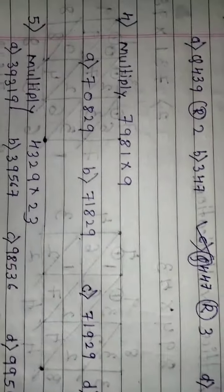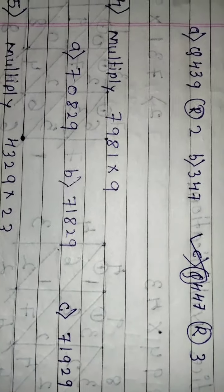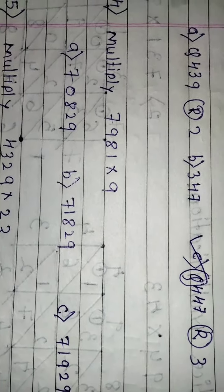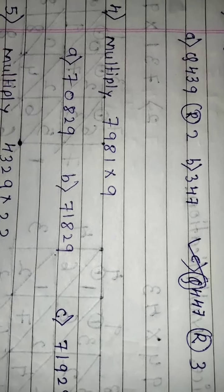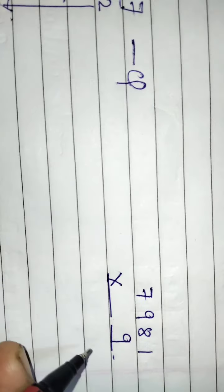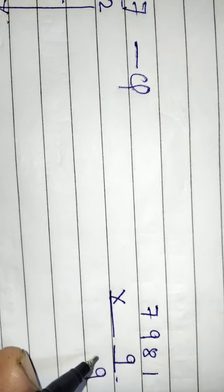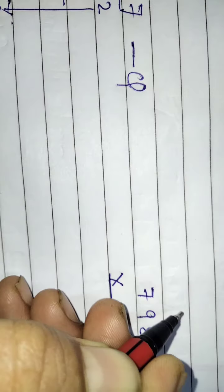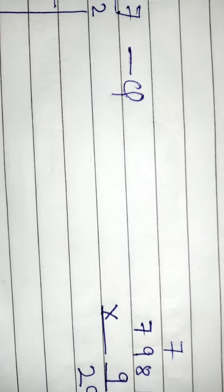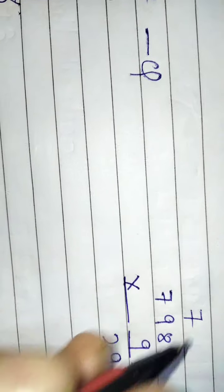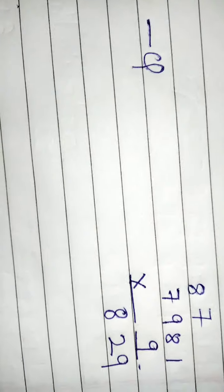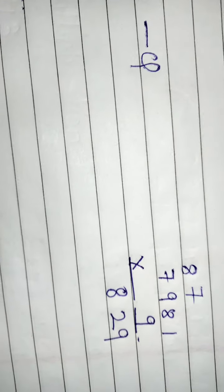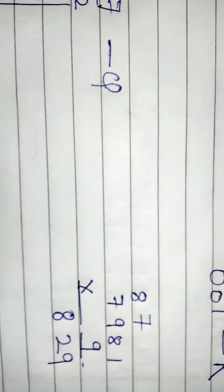Next it is a multiplication. 7981 into 9. 9 1's are 9. 9 8's are 72. 2 is here 7 will go here. 9 9's are 81. 81 plus 7, 88. 8 will come here, carry here. 9 7's are 63. 63 plus 8.